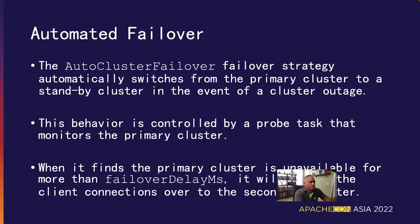Let's discuss the automatic failover client first. This failover client will automatically switch clients over to a designated standby cluster if and when it detects an outage on the primary cluster. This is accomplished by a probe task that periodically interrogates the primary cluster to determine if it's running. Once it detects that the primary cluster is unavailable, it starts a timer to measure the length of the outage. This is to ensure that we don't inadvertently switch over due to a transient network issue that immediately resolves itself. If the outage continues for longer than a user-configured duration, then the switchover occurs.